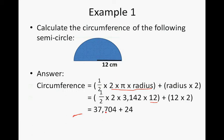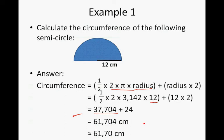So this is the circumference of the semi-circle: 37.704, and then we add the two radii, and the answer is 61.704. Rounded, it's 61.70.